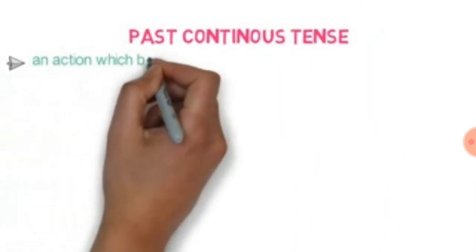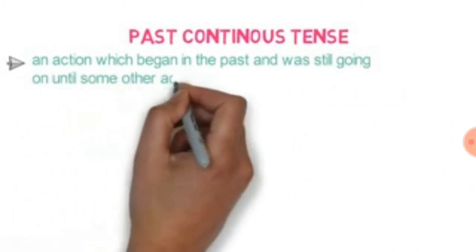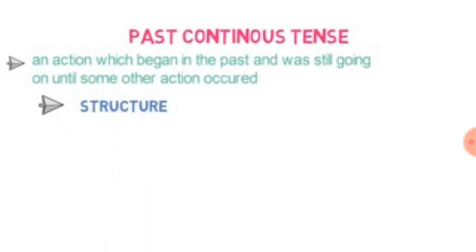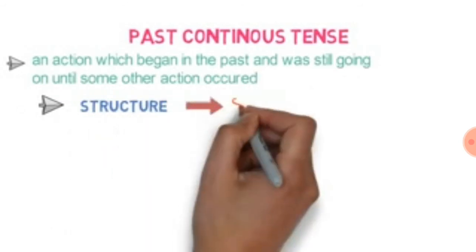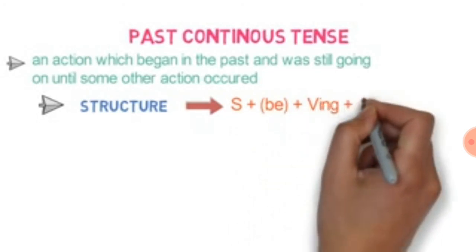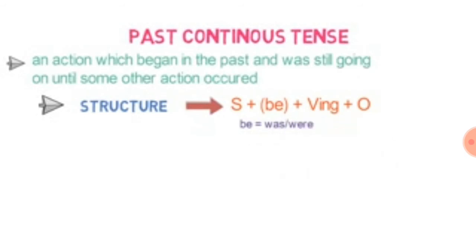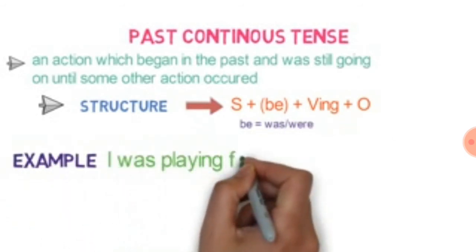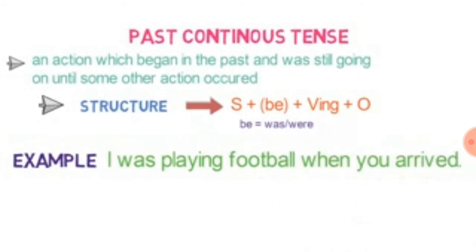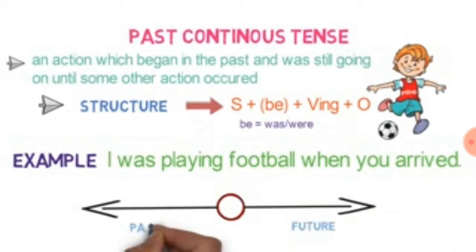When you talk about the past continuous tense: an action which began in the past and was still going on until some other action occurred. I am playing football right now. I am playing football when you arrived.